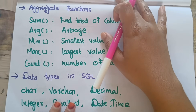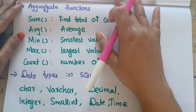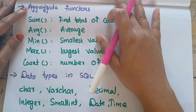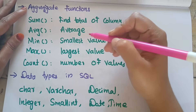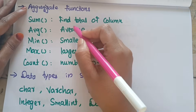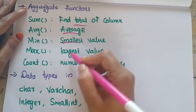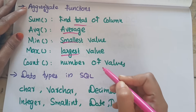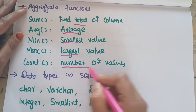Aggregate functions in SQL are used for: SUM — total, AVERAGE — average value, MIN — smallest value, MAX — largest value, and COUNT — counts the records. These are the five main aggregate functions used in SQL.